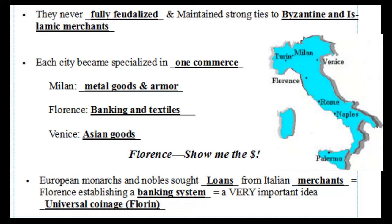Those cities that had been major trade centers during the Roman Empire stay major trade centers, so they never fully feudalize. They just become more independent city-states, keeping their ties with the Byzantine Empire and the Islamic Empire as they grow and become specialized in particular commerce.